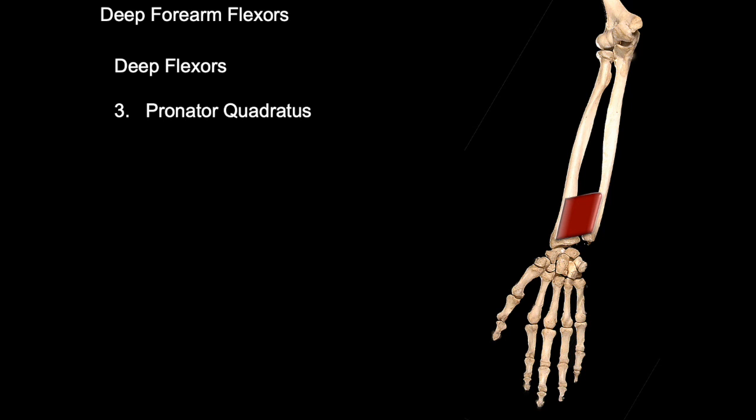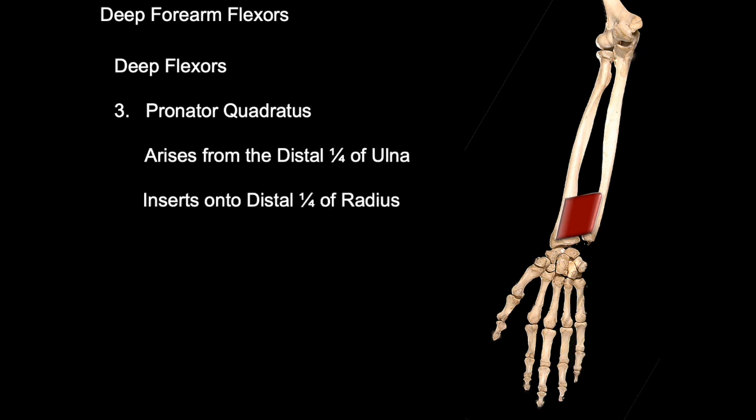Pronator quadratus. This arises from the distal quarter of the ulna and inserts onto the distal quarter of the radius. As its name suggests, it pronates the forearm.